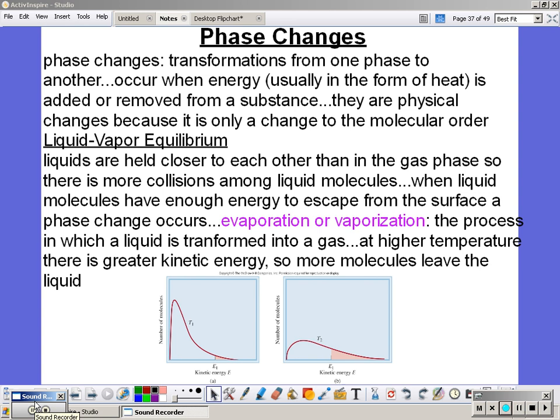Phase changes. A phase change is a transformation from one phase to another. It occurs when energy, usually in the form of heat, is added or removed from the substance. They are physical changes because it is only a change at the molecular level. So we're only changing the spacing in between the molecules, changing the strength of the intermolecular forces.